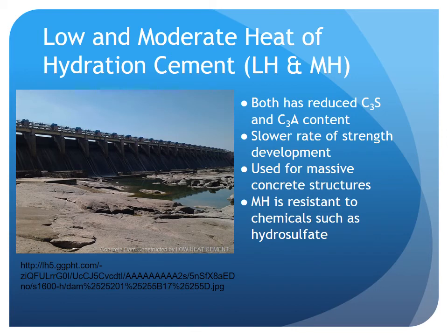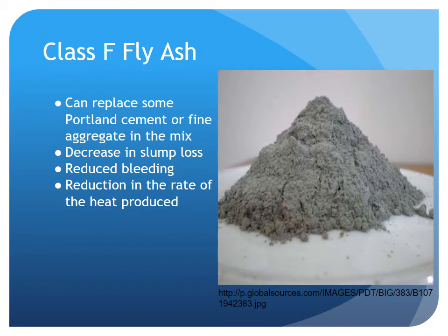Low and moderate heat of hydration cements are readily available and commonly used when pouring concrete in hot weather. The reduced tricalcium silicate and tricalcium aluminate content leads to a much slower rate of strength development. Moderate heat of hydration cement is also resistant to chemical attacks such as hydrosulfate. In addition, various admixtures are often added to the mix to decrease the hydration temperature. Class F fly ash can replace part of the Portland cement or fine aggregate in a mixture without any significant loss of strength and is very effective in hot weather concreting. The fly ash has a smaller slump loss and reduced bleeding compared to general Portland cement mix, and there is also a reduction in the rate of heat produced, which causes less water evaporation and leads to a longer setting period.